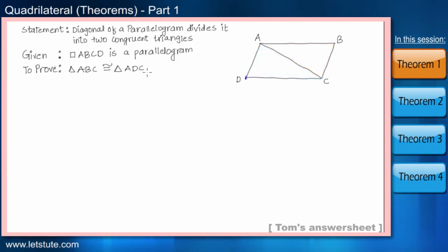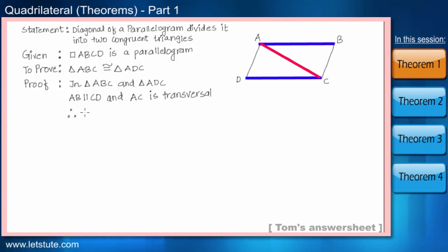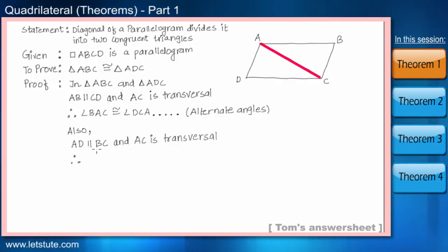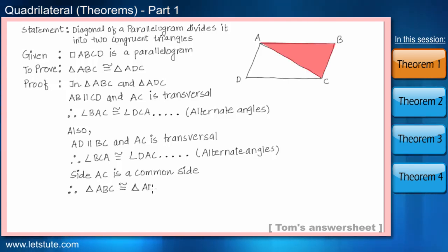Now, the given thing was ABCD is a parallelogram. That means, the side AB is parallel to CD and AC is acting as transversal line. Therefore, angle BAC is equal to the angle DCA. And similarly, angle BCA is equal to angle DAC. Where the diagonal AC is the common side for both the triangles. And therefore, triangle ABC and triangle ADC are congruent.